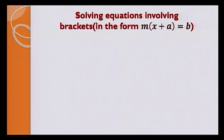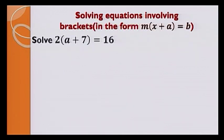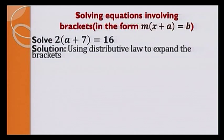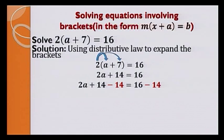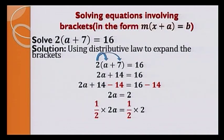Let's move on to solving equations involving brackets in the form m times (x plus a) equals b. For example, 2 into (a plus 7) is equal to 16. Method 1 uses the distributive law. We expand the left-hand side: 2 times a plus 2 times 7, giving 2a plus 14 equals 16. We eliminate plus 14 by subtracting 14 on both sides, getting 2a equals 2. Then we multiply both sides by half to eliminate the coefficient 2, and the answer is a equals 1.